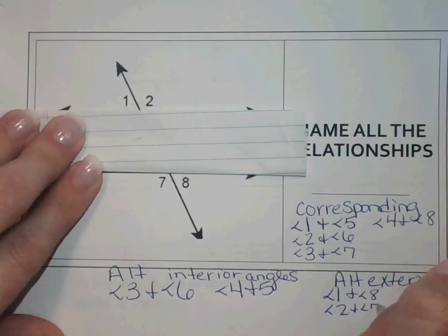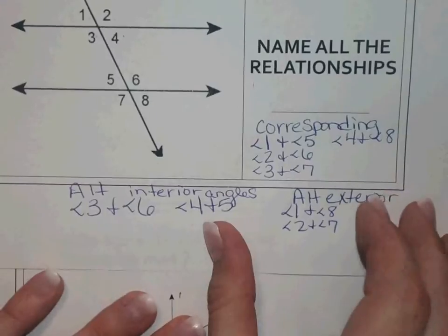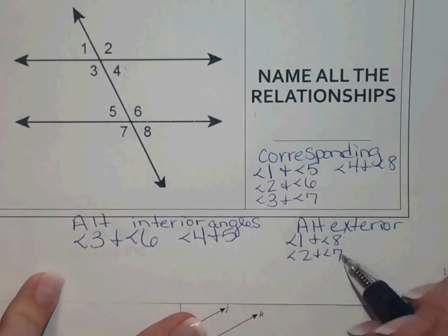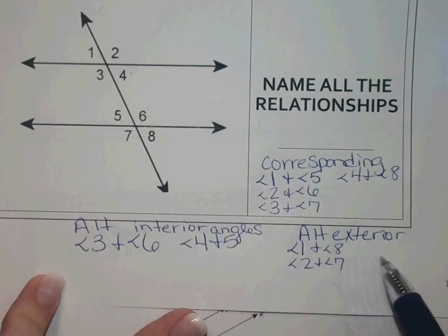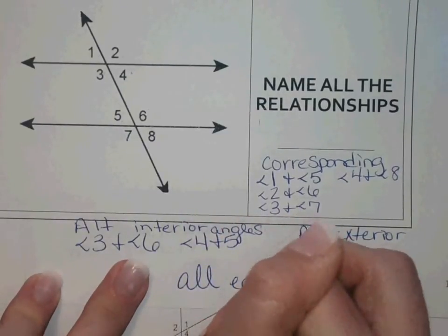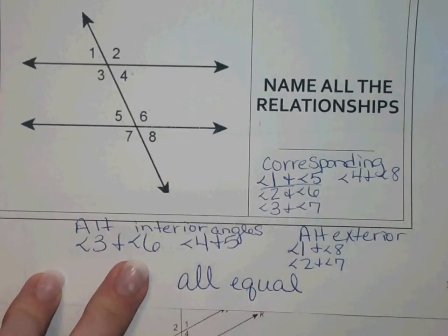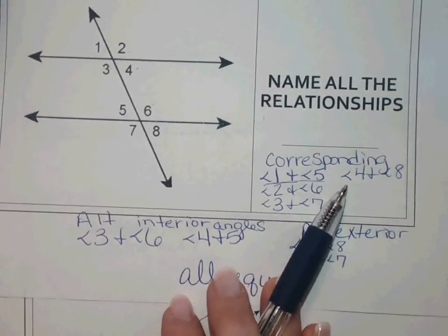Why did we look for all of these different relationships? We looked here because the corresponding angles, the alternate interior angles, and the alternate exterior angles are all equal. So all of these pairs — for example, angle two and angle five — have the same angle measures, as long as we have parallel lines. Let's put that into practice.